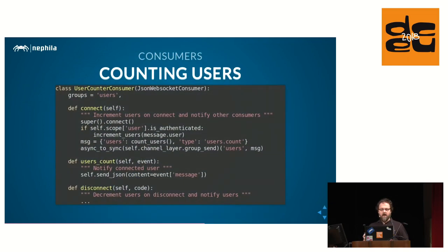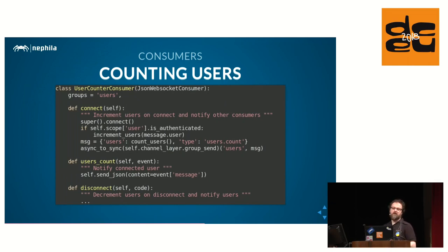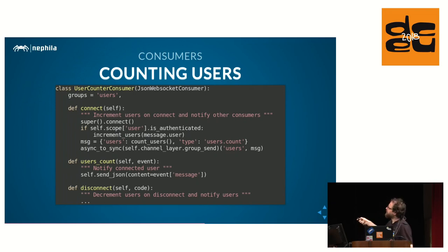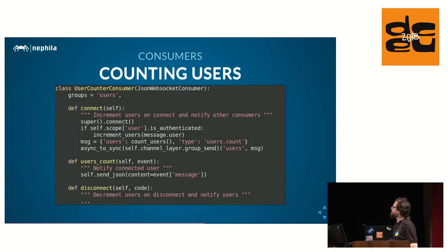Counting users is very simple because we have a stateful connection. When a client connects, we increment the number of users, create a message with the actual number of users connected, and send it back to the users group. Each consumer is attached to a group according to a group attribute - I set it as a static 'users' string, though note the comma: it's a tuple, not a simple string. I can also use a property to make it more dynamic. I send the message and in the same consumer read the number of users and send it back to clients.